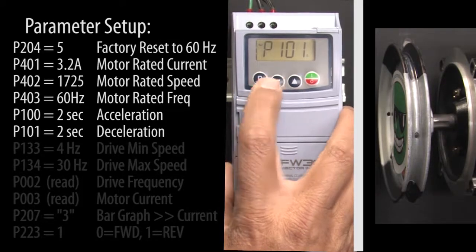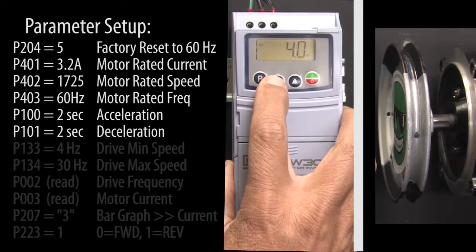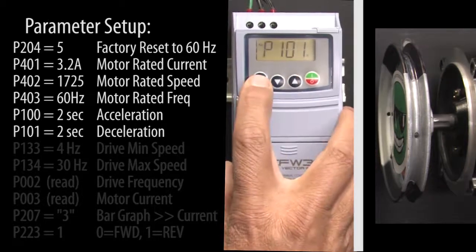Scroll to the next parameter on our list, hit P and change the deceleration to 2 seconds and hit P to accept that.